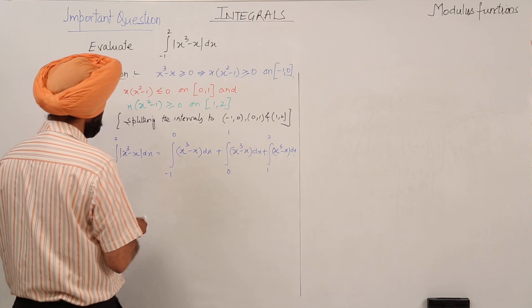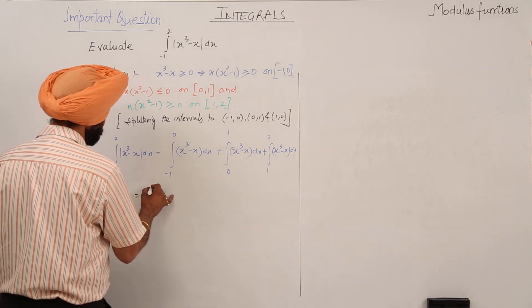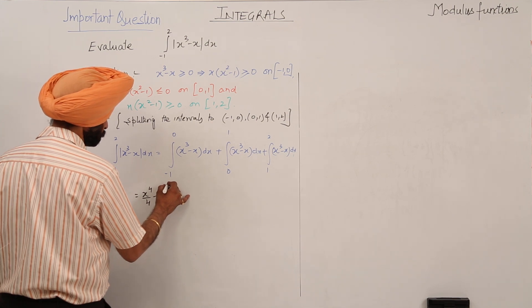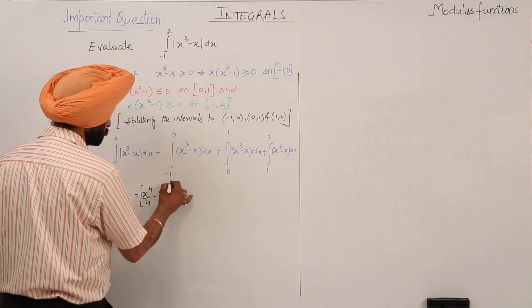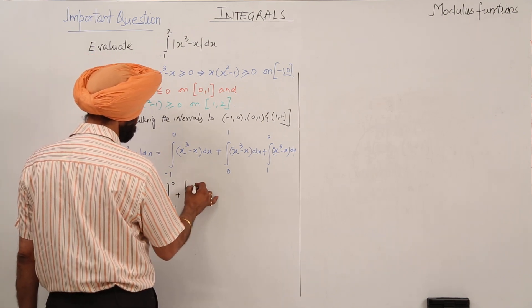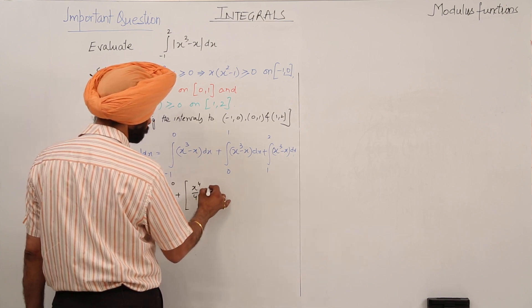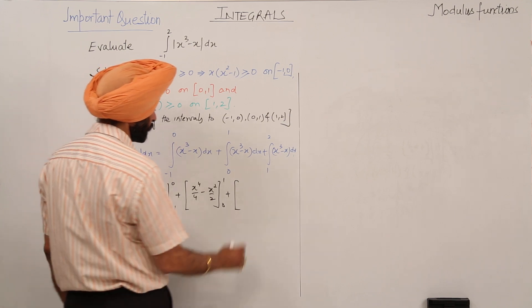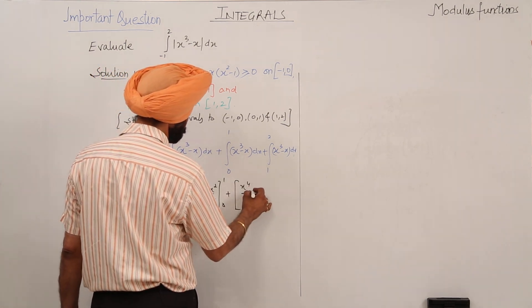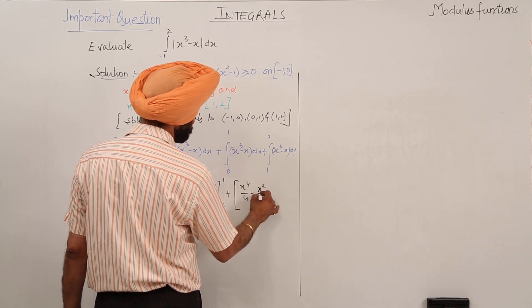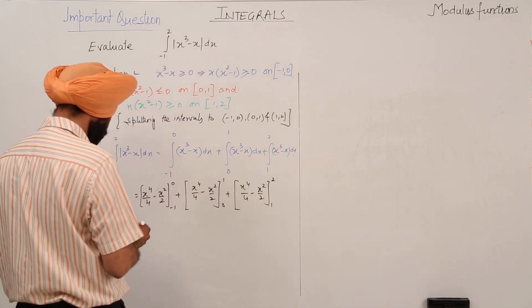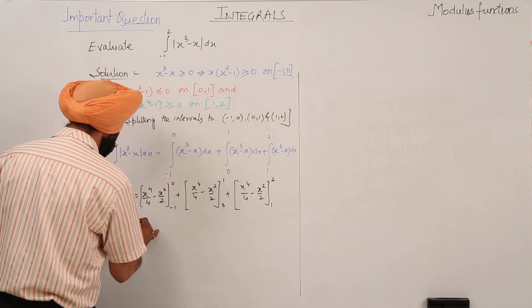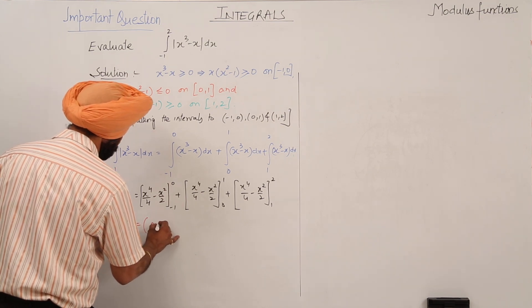Now this becomes [x⁴/4 - x²/2] from -1 to 0, plus [x⁴/4 - x²/2] from 0 to 1, plus [x⁴/4 - x²/2] from 1 to 2.